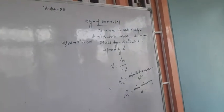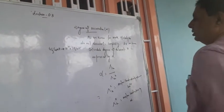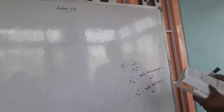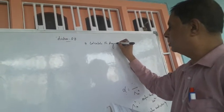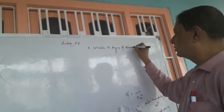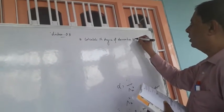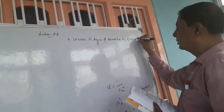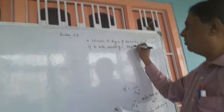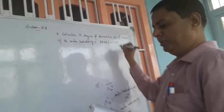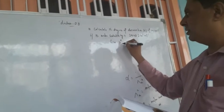Now, we have to take one of the numerical problems for this. How can we calculate this? The question is: calculate the degree of dissociation alpha of acetic acid, if the molar conductivity is 339.05 siemens per centimeter square per mole.